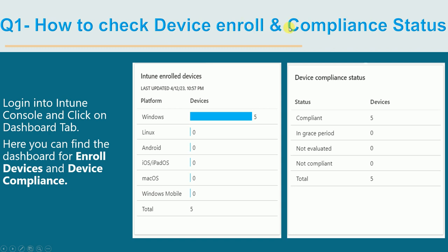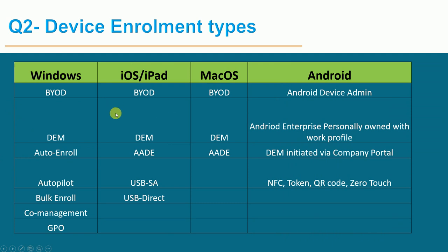Question one: how to check the device enrollment in the console and the compliance status. You have to log in to your Intune console and then click on the Dashboard tab. There you can find two charts — Intune enrolled devices and compliance. Here you can see the Android devices and the compliance part.